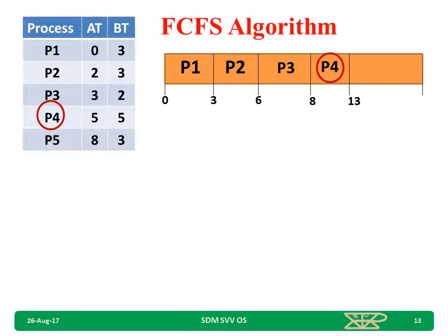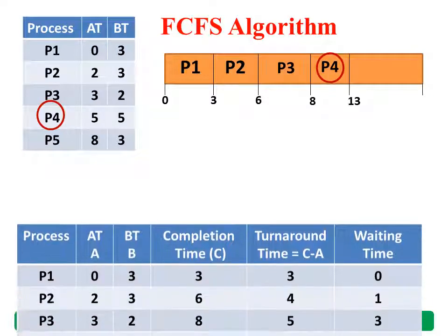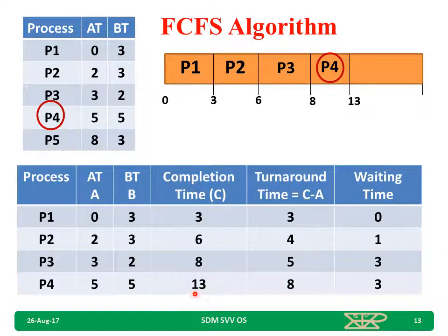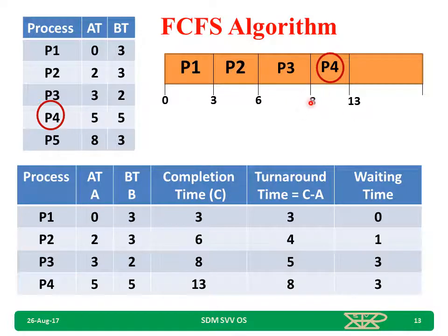P4 arrived at 5 milliseconds but CPU is given after 8 milliseconds. It takes 5 milliseconds, so 8 plus 5 equals 13 milliseconds — P4 completes at 13. Turnaround time: 13 minus arrival time 5 equals 8. Waiting time: CPU given at 8, arrived at 5, so 8 minus 5 equals 3 milliseconds.